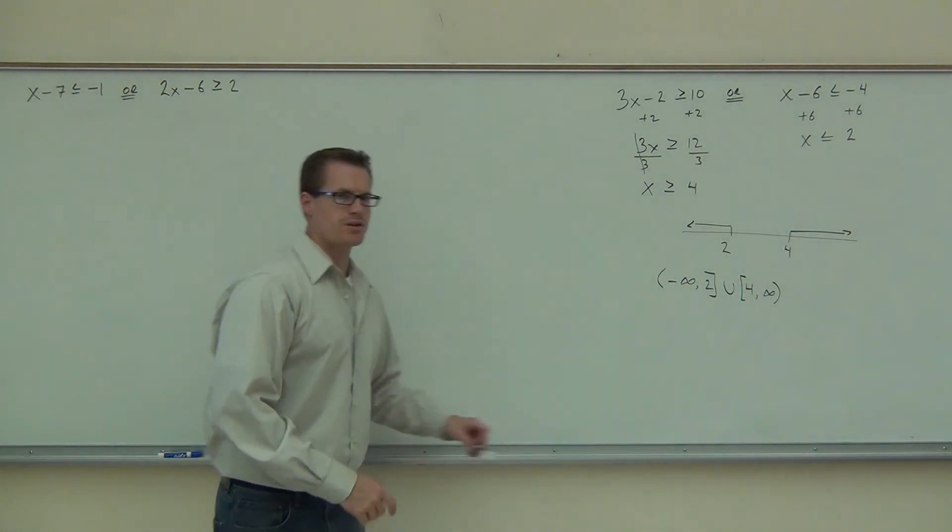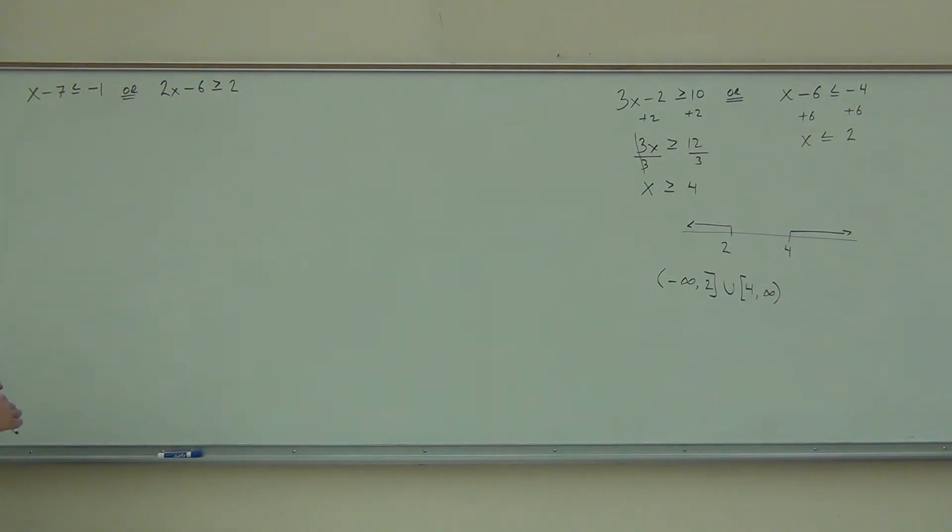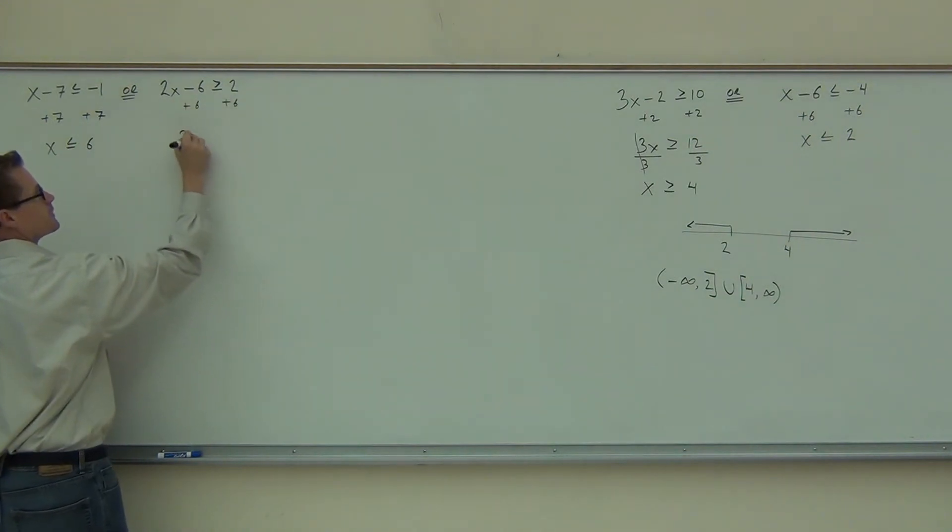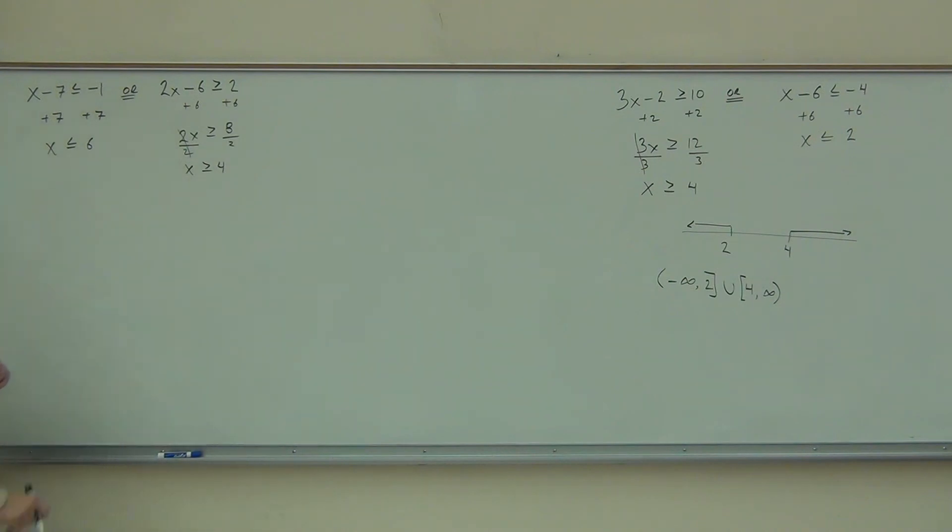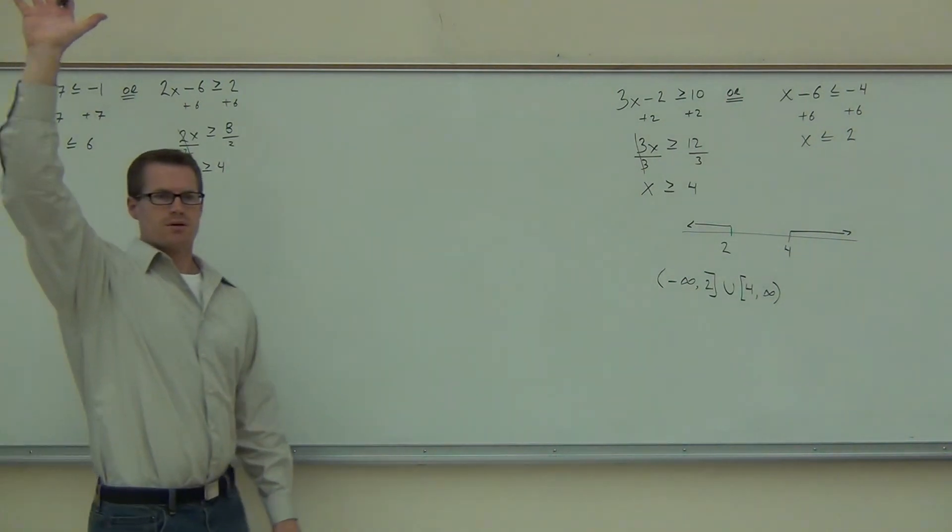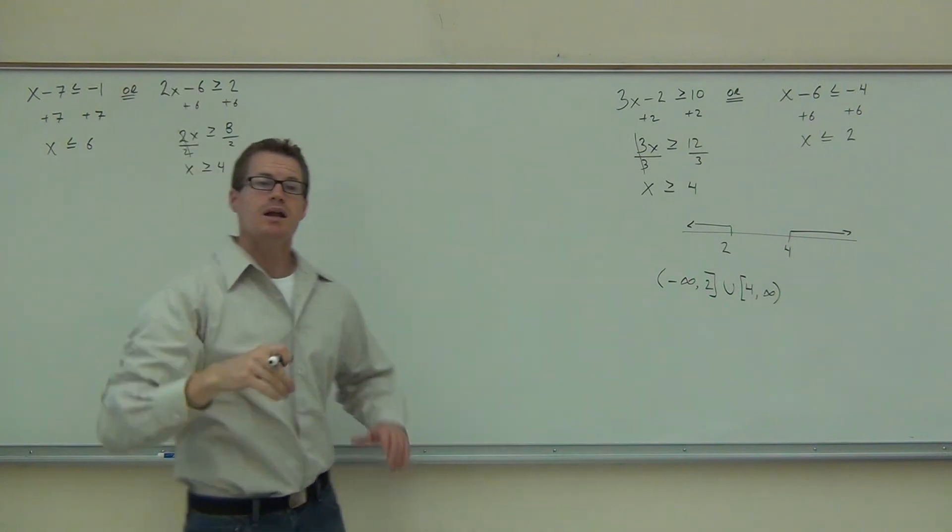So the solving of these things, that's really not supposed to be all that bad for us. We'll add 7 here. We'll get x is less than or equal to 6. We don't change any of those inequalities around because we are not dividing by a negative. How many people were able to solve it down to that problem? Good, that's fantastic. Now we graph it.